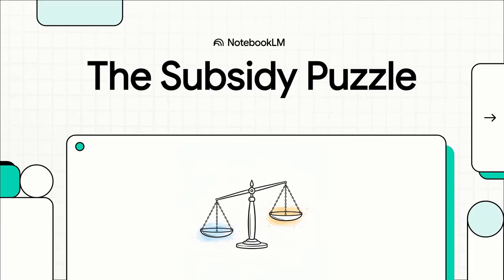Have you ever thought about what really happens when the government makes something cheaper with a subsidy? You'd think the answer is simple, right? We just pay less. But it's actually a fascinating economic puzzle, and the answer has a surprising twist that might just change how you look at a simple discount.